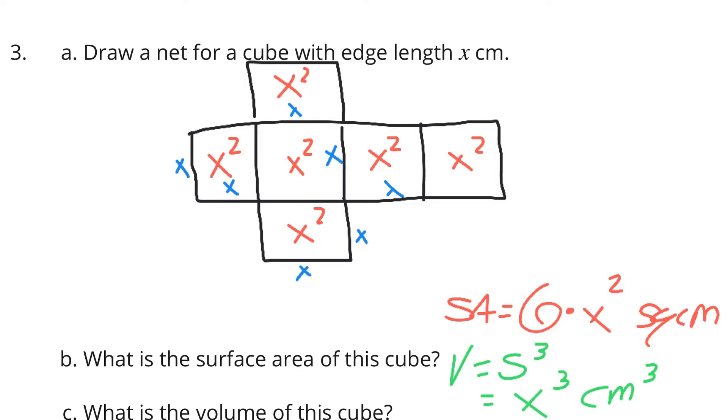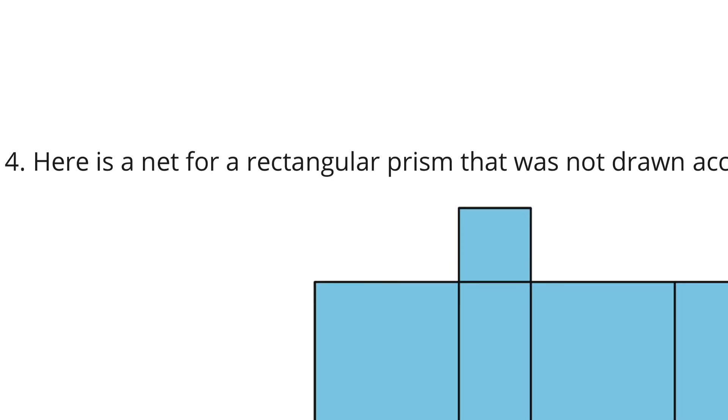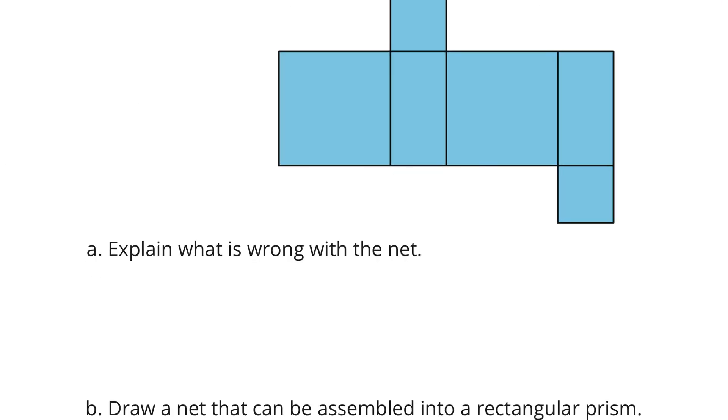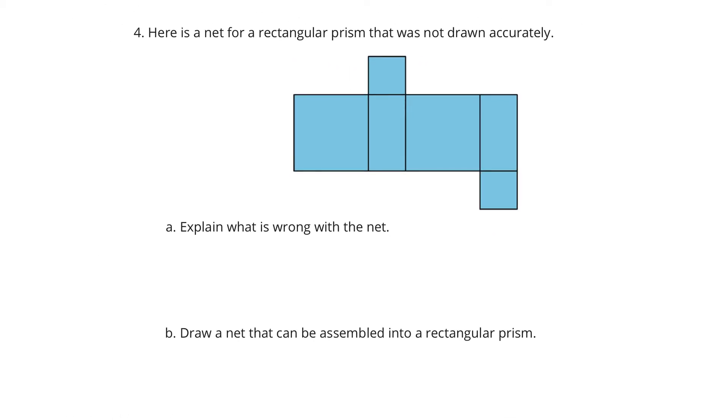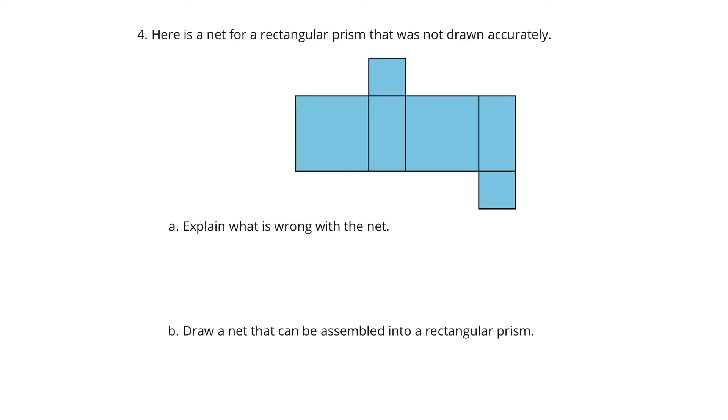Continuing on now to problem four. Here is a rectangular prism that was not drawn accurately. A. Explain what is wrong with this net. B. Draw a net that can be assembled into a rectangular prism.